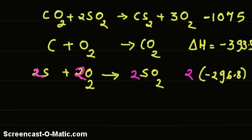Now you can see these are the three new equations which we have obtained, and we will use these equations to derive the required equation. Whatever operations we do on these equations — like subtraction, addition — the same operations we will do on the enthalpy side. To begin with, we are going to add all three, ensuring that we get carbon on the left side, two sulfur on the left side, and CS₂ on the right side.